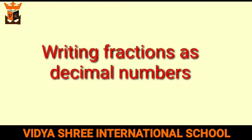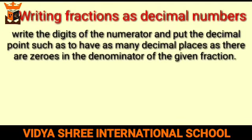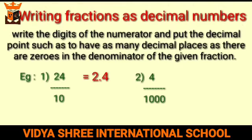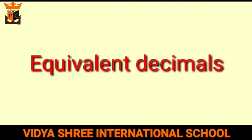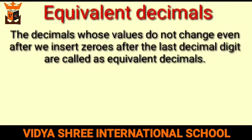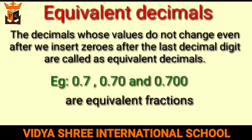Writing fractions as decimal numbers: write the digits of the numerator and put the decimal point so that there are as many decimal places as there are zeros in the denominator. For example, 24 upon 10 can be written as 2.4, and 4 by 1000 can be written as 0.004. Equivalent decimals: decimals whose values do not change even after inserting zeros after the last decimal digit are called equivalent decimals. For example, 0.7, 0.70, and 0.700 are equivalent decimals.